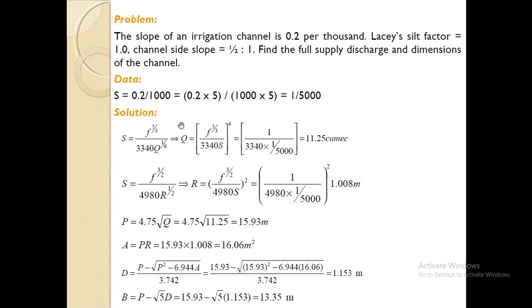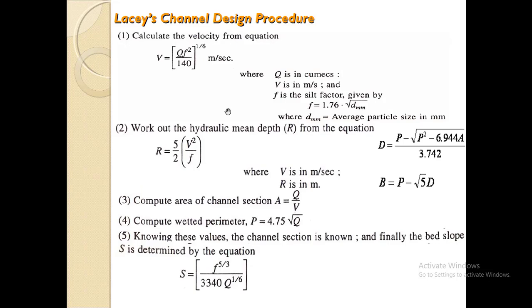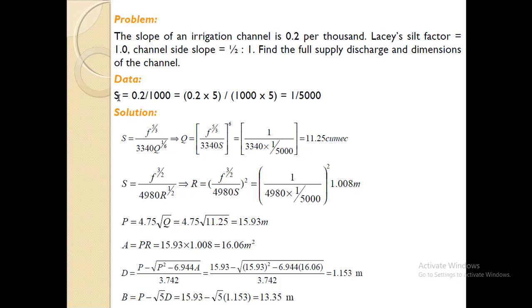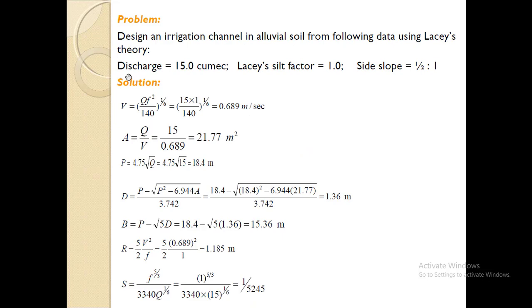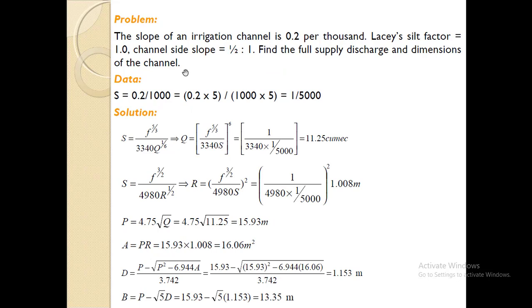The second problem gives the slope of an irrigation channel as 0.2 per thousand, which means 1 in 5000. The Lacey silt factor and channel side slope are also given. We need to find the full supply discharge and the channel dimensions. Previously we had discharge given and solved for other quantities; now we must calculate the discharge and dimensions of the channel by following the same Lacey procedure.